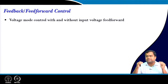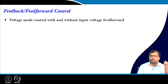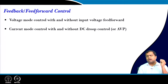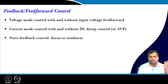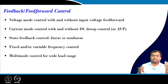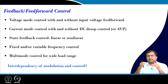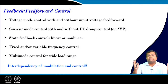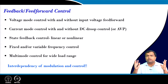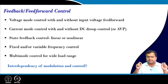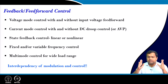We have discussed in our earlier course feedback and feed forward control types including: voltage mode control with and without input voltage feed forward, current mode control with and without droop control, state feedback control, linear and non-linear control, fixed and variable frequency control, and multi-mode control. All these controls are actually interdependent with the modulation technique — they are not totally independent. For example, in feedback voltage control you can use either pulse width modulation or on-time modulation. Similarly in current mode control you can have various modulation techniques which translate your feedback signal into duty ratio or on/off time. All these details have been discussed in the previous NPTEL lecture on control and tuning methods in switch mode power converters.